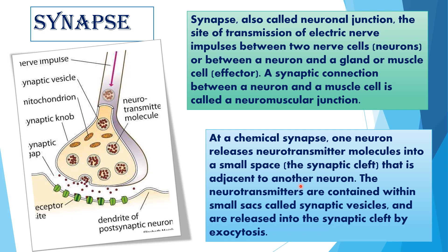According to the nature of connections, synapses are of three types, all of which are found in the cerebellum of the brain. First is Axodendritic Synapse, second is Axosomatic Synapse, and third is Axo-axonic Synapse. Axon of one neuron terminating on the dendrites of another neuron forms an axodendritic synapse; terminating on the cell body or soma forms an axosomatic synapse; and terminating on the axon of another neuron forms an axo-axonic synapse.